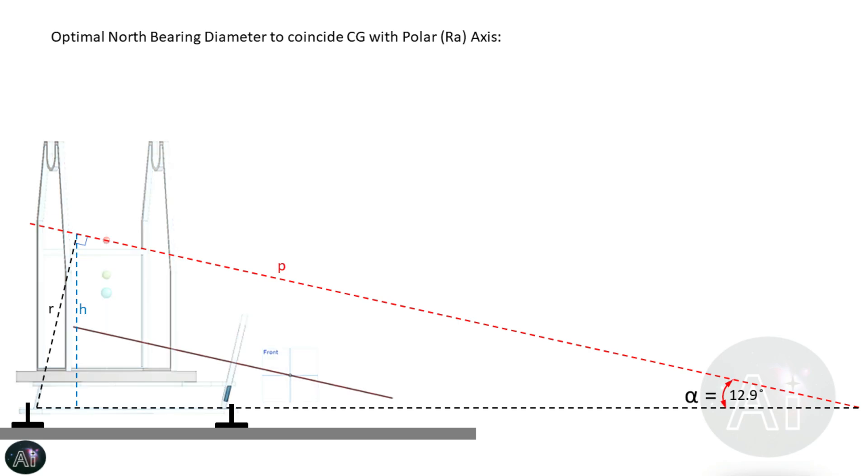Here we have just marked the names of the different sides of a right-angled triangle that is getting formed. R is actually the radius of the north bearing. H is the height where our radius of north bearing is coinciding with the polar axis. Please note that in this case we will assume it to be more or less same as the height of the center of gravity plus the delta in the height between the upper and bottom plates of our equatorial platform, which will be shown in detail in the subsequent slides.